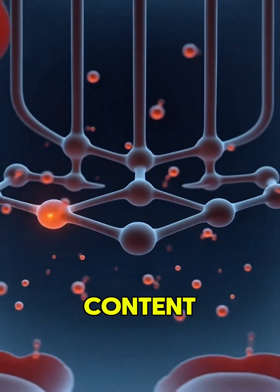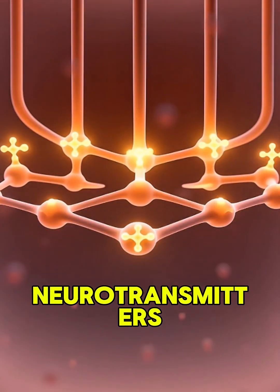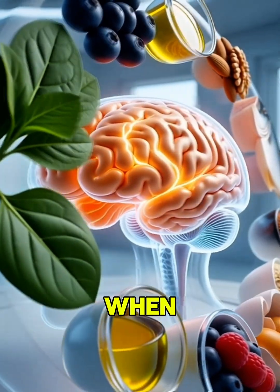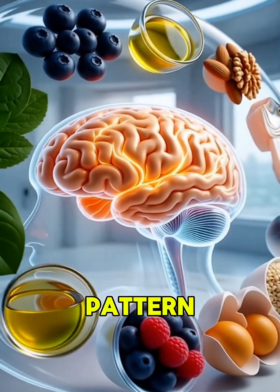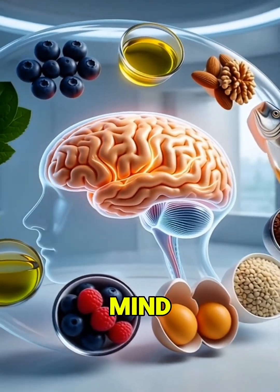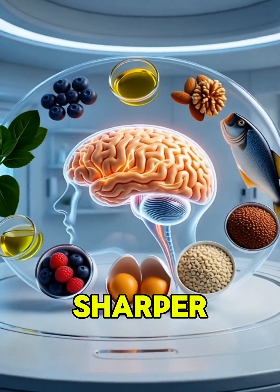with their rich choline content, may support the neurotransmitters involved in memory. When combined into a balanced pattern, like the Mediterranean or MIND diet, these foods can help keep your brain sharper, longer.